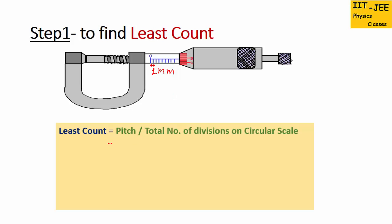So pitch is 1 mm, and this is the circular scale — it has a total of 100 divisions. So divided by 100: 1 mm divided by 100 gives us 0.01 mm. So we found the least count of the screw gauge as 0.01 mm.